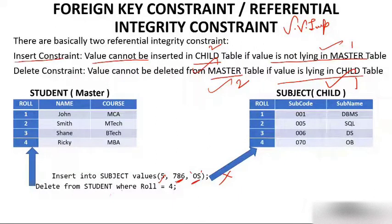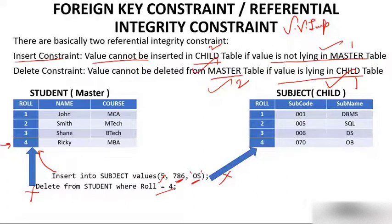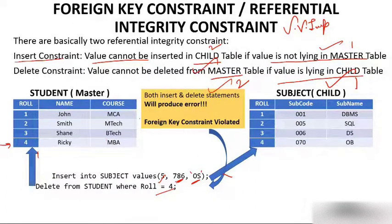The second constraint is the delete constraint. If you try to execute 'DELETE FROM student WHERE role = 4', you want to delete that row from the master table. But role number 4 is still present in the child table, so this deletion will not be allowed — it would violate the insert constraint. So: if you want to insert, insert in the master table first; if you want to delete, delete from the child table first. Attempting to do the opposite will produce a foreign key constraint violated error.